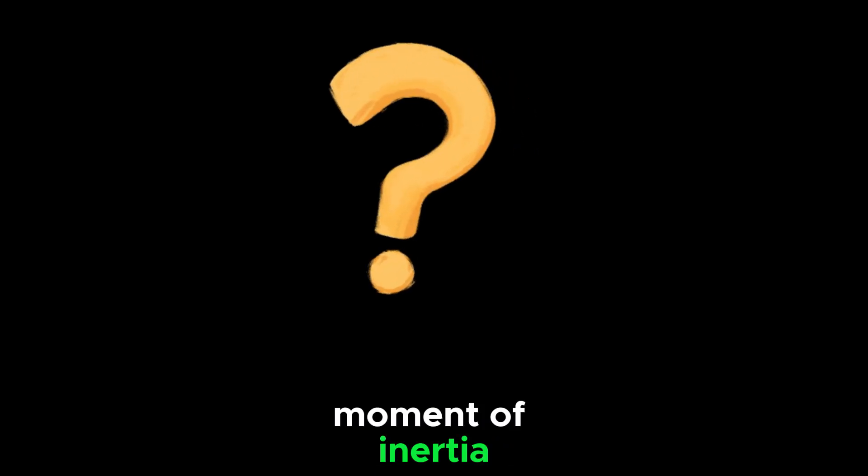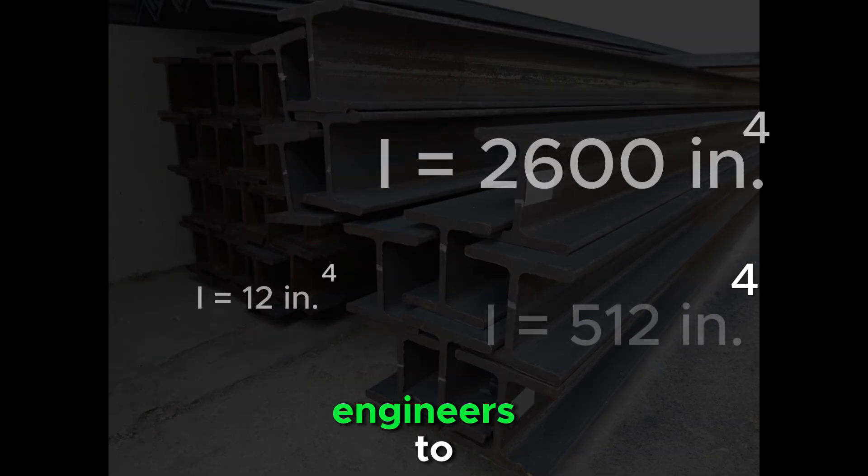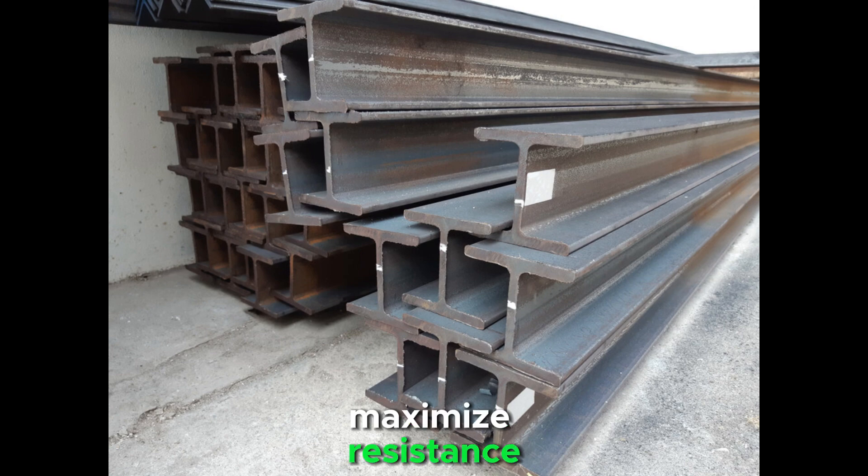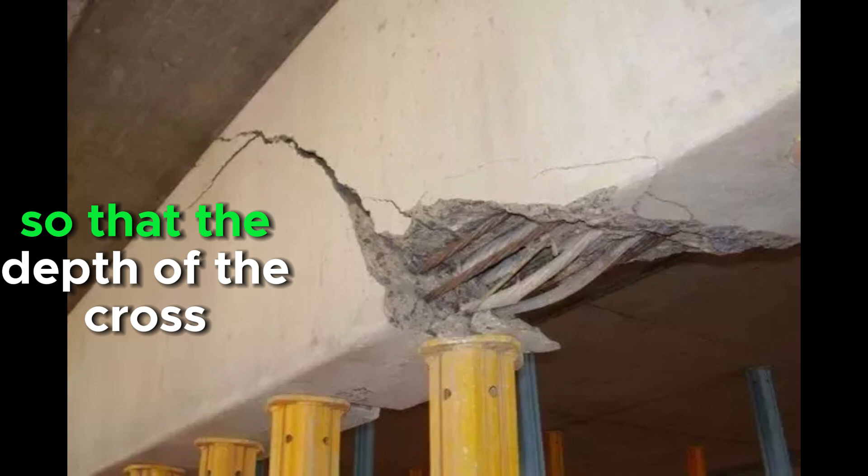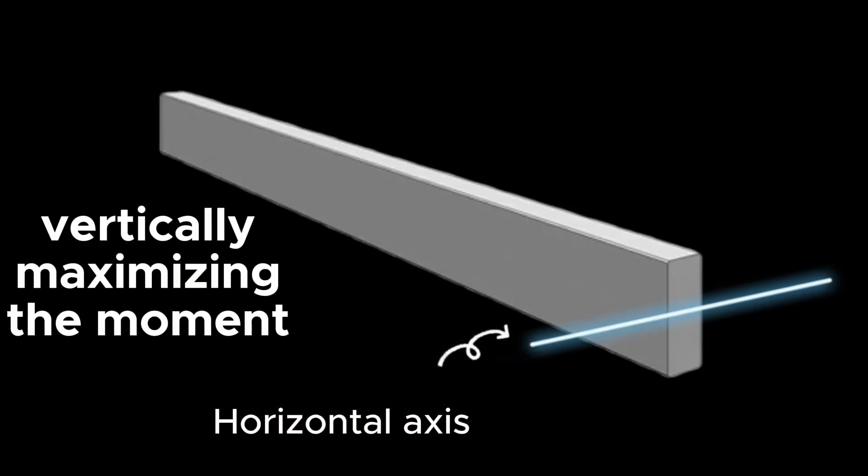But why is moment of inertia important? It's because the difference in values enables engineers to design structural elements in ways that maximize resistance to rotation. For example, engineers design beams so that the depth of the cross section is oriented vertically, maximizing the moment of inertia about the horizontal axis.